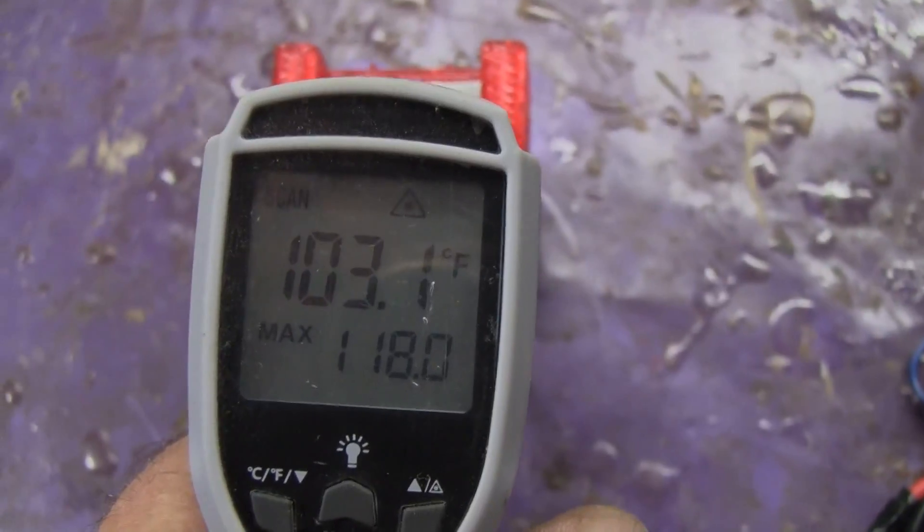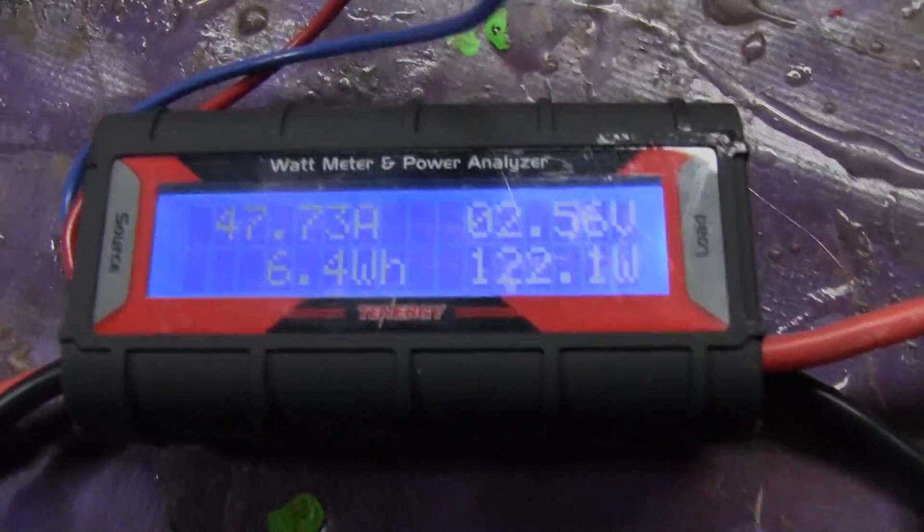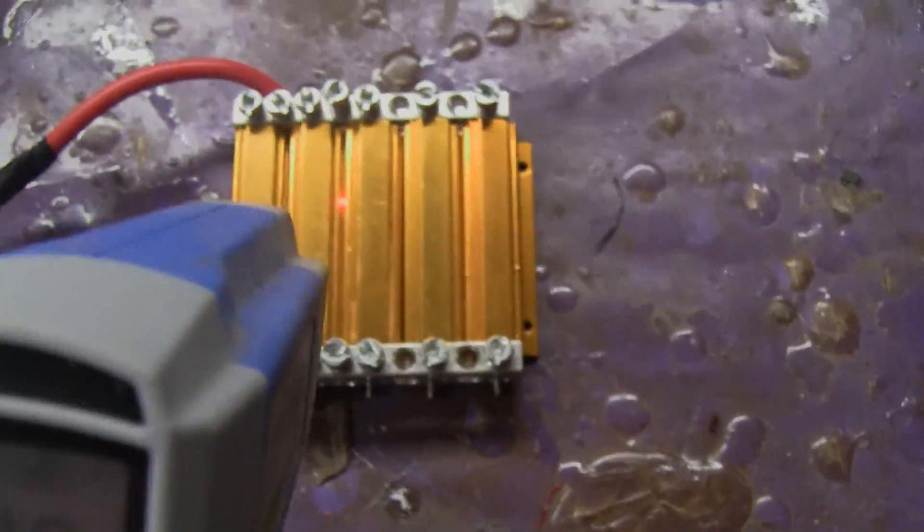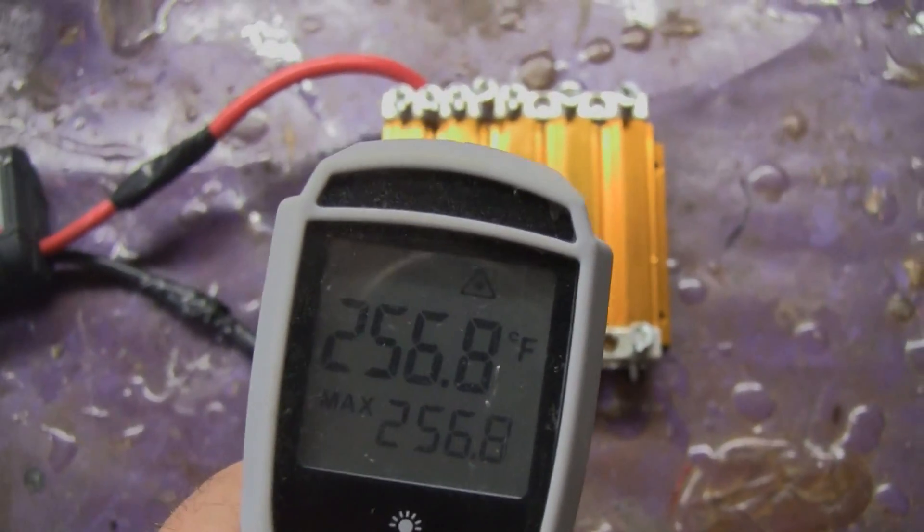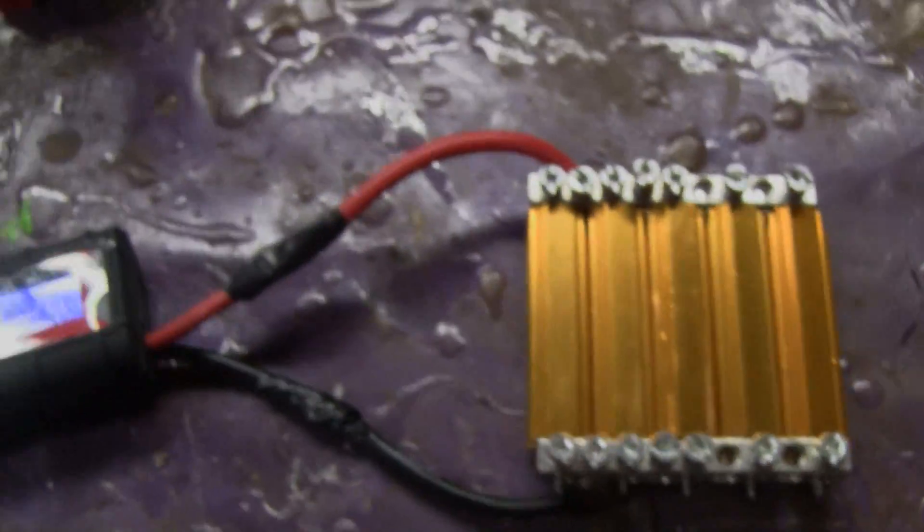So the battery blocks are easily handling this. You could still touch it, though it is starting to get warm. And we're still drawing 47 amps. And my resistors, though, are at 250 degrees. Okay, time to end this experiment. They're melting my plastic tablecloth.